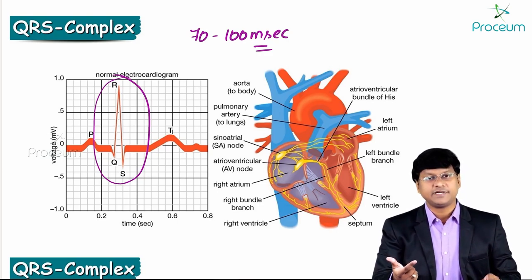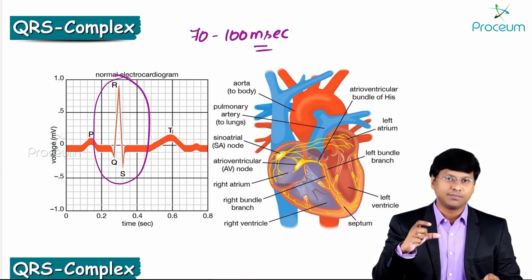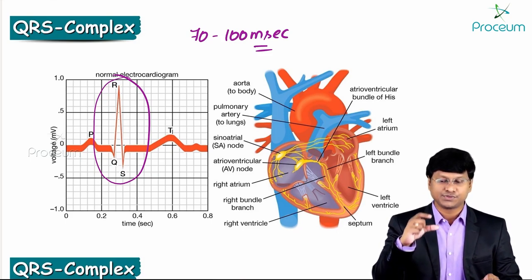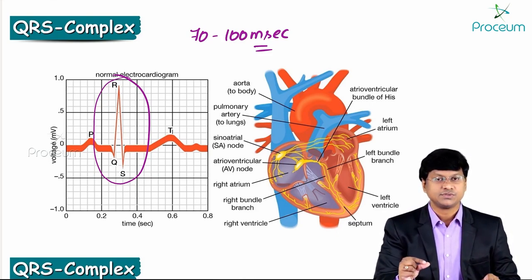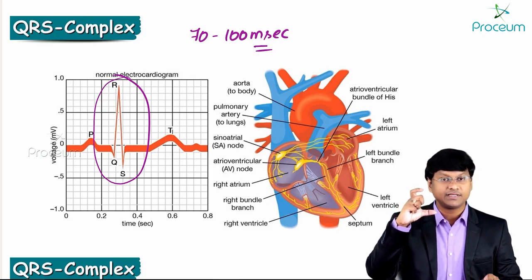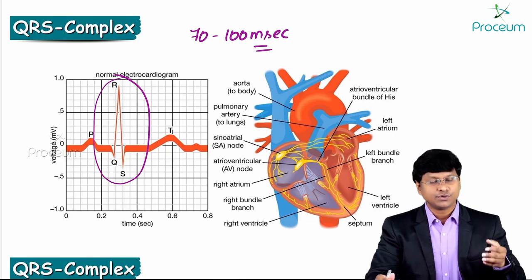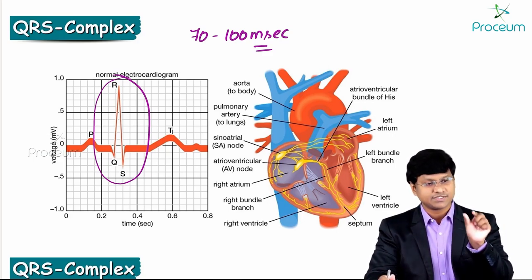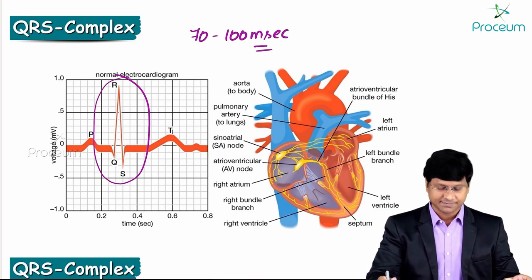Number two: I will discuss the amplitude of the QRS complex. In certain clinical scenarios you have low amplitude QRS complexes — what we call low voltage ECGs — and in others you have QRS complexes with larger amplitude, representing high voltage. So I will discuss abnormalities related to both duration and voltage. Now let us start.